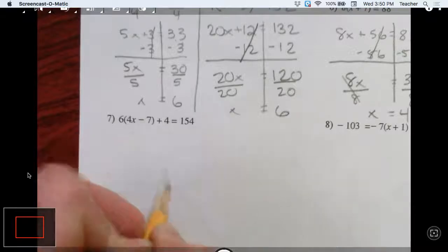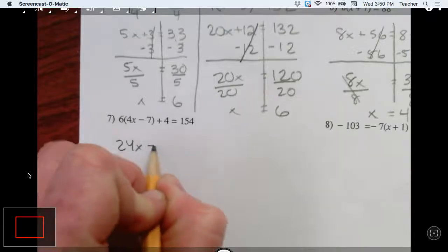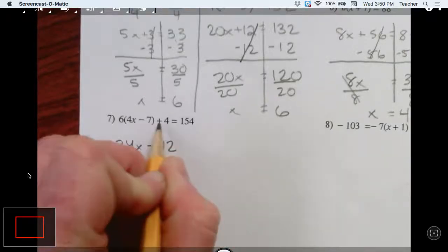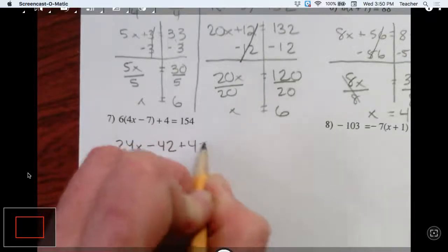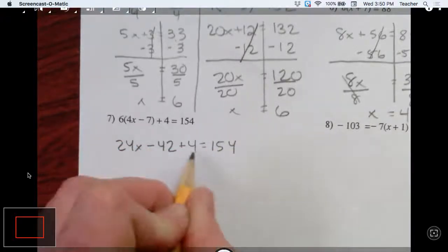So I think I'm going to do that. I have 6 groups of 4x minus 7. 6 times 4, 6 times negative 7. Still have the plus 4.